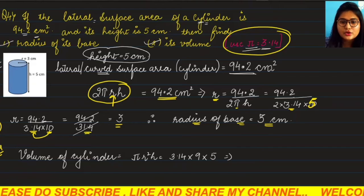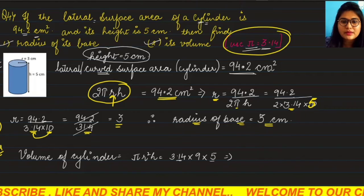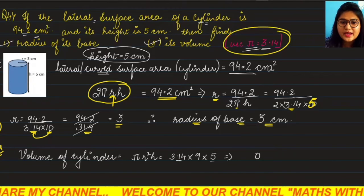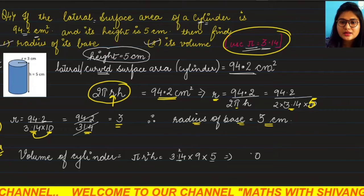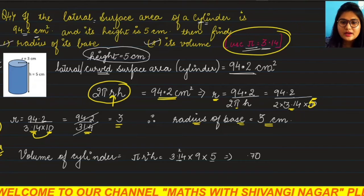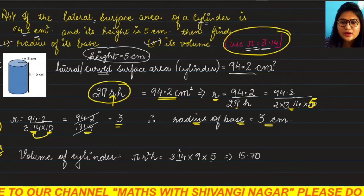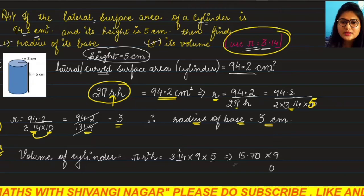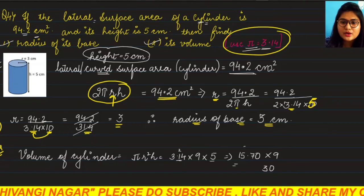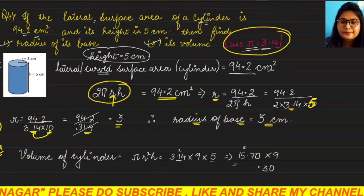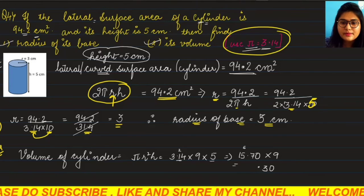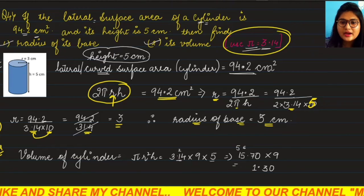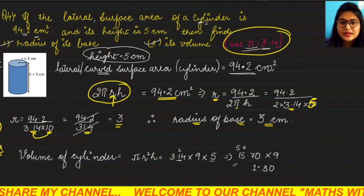Let's multiply: 5 × 3.14, so 5 fours 20 carry over 2, 5 ones 5 plus 2 is 7. Then 5 threes 15. Now 15.70 × 9: 9 times 0 is 0, 9 sevens 63 carry over 6, decimal point, 9 fives 45 plus 6 is 51 carry over 5, and 9 ones 9 plus 4 plus 5 is 14.